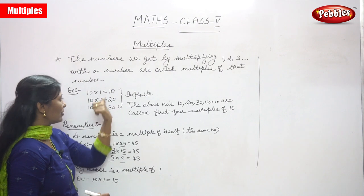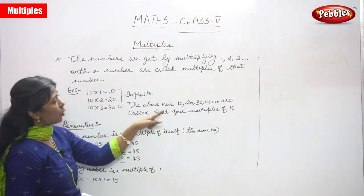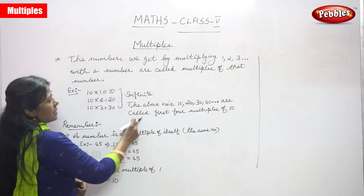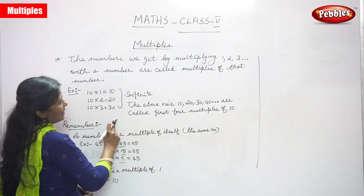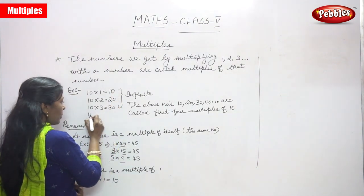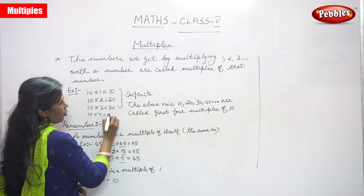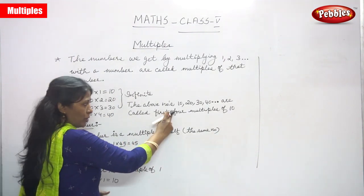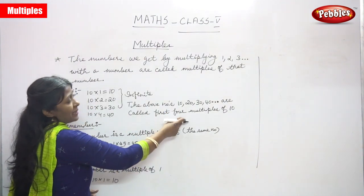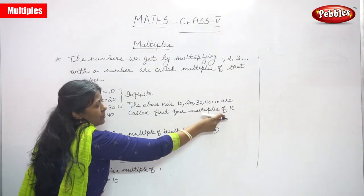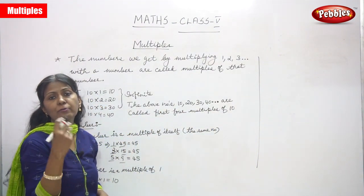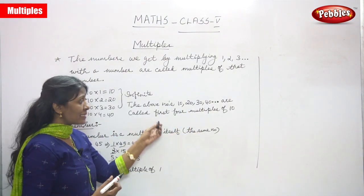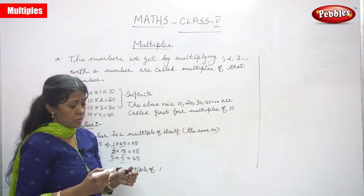So 10 is a multiple of 10. The numbers 10, 20, 30, 40 are called the first four multiples of 10. If you multiply 10 into 4 you get 40. To get the multiples of 10, you multiply by 1, 2, 3, 4, 5, and so on.